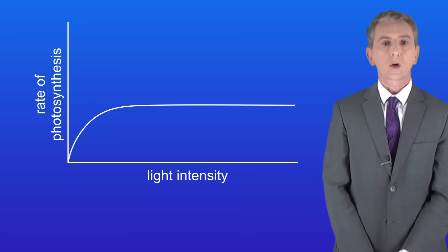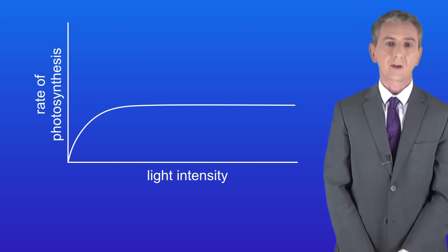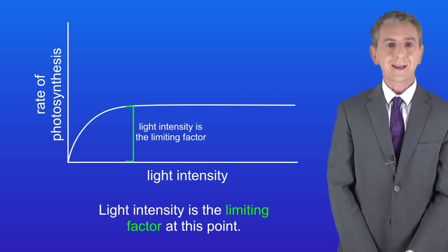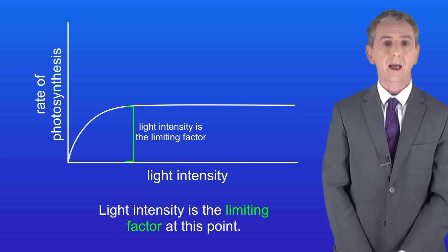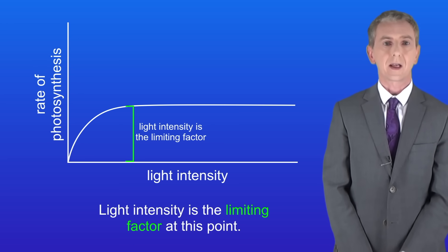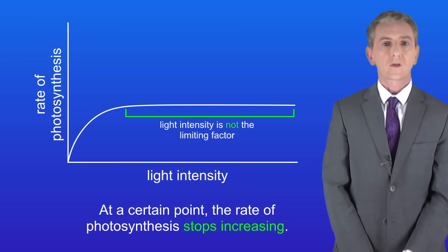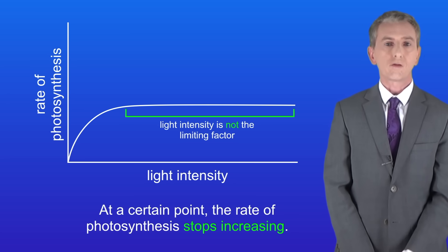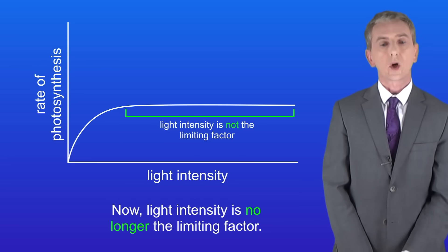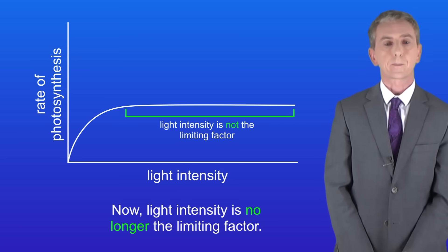Initially the rate of photosynthesis increases as we increase the light intensity. This tells us that light intensity is the limiting factor at this point — in other words, the rate of photosynthesis is limited by the light intensity. However, at a certain point the rate of photosynthesis stops increasing, and light intensity is no longer the limiting factor, so something else must be limiting.